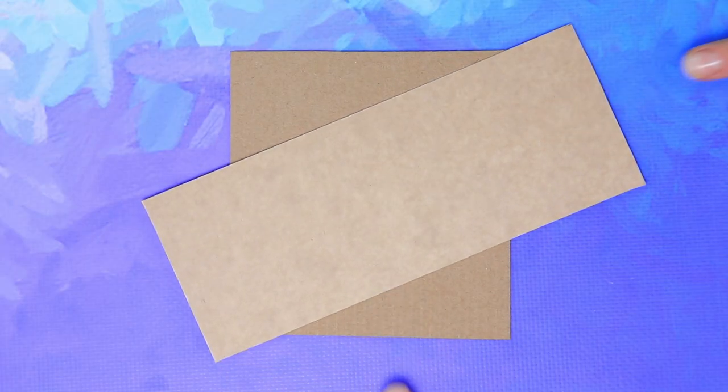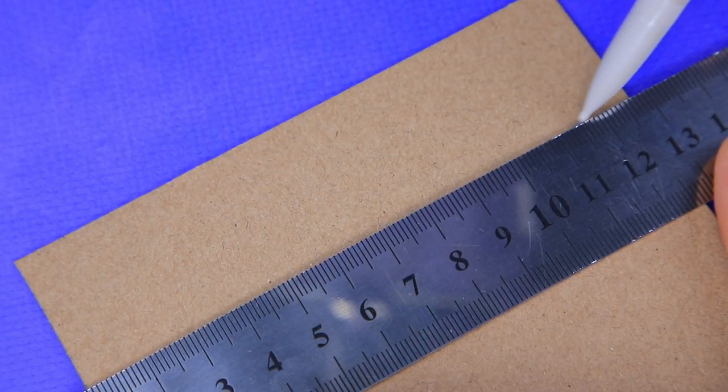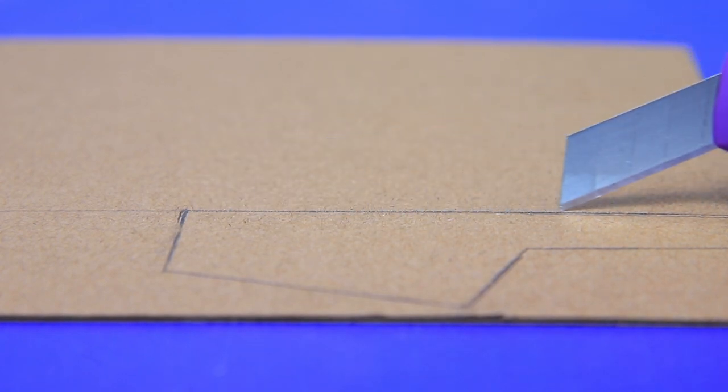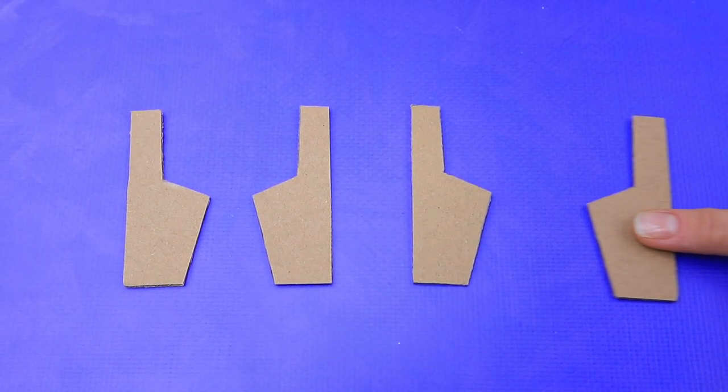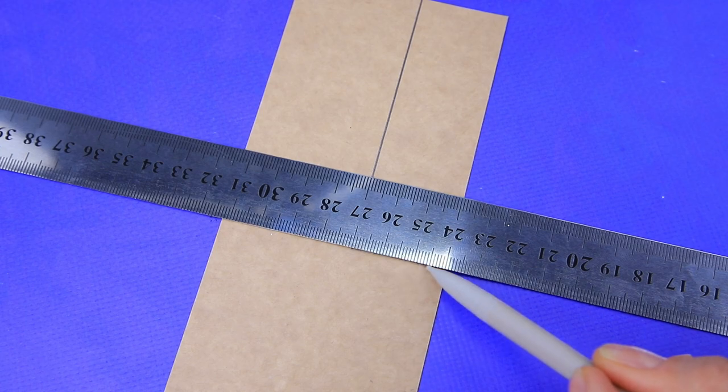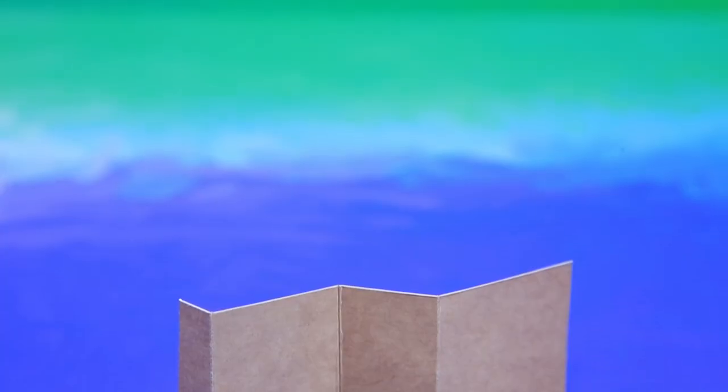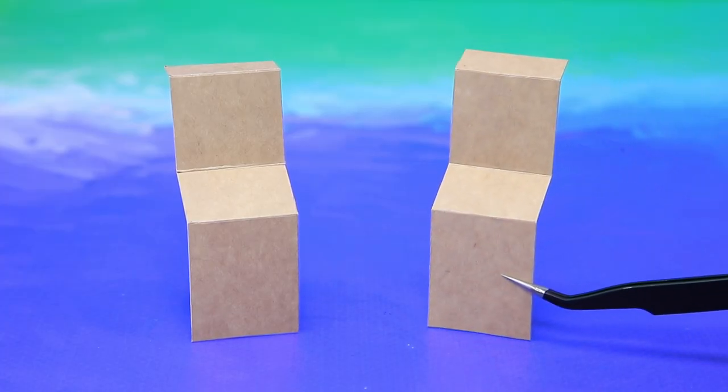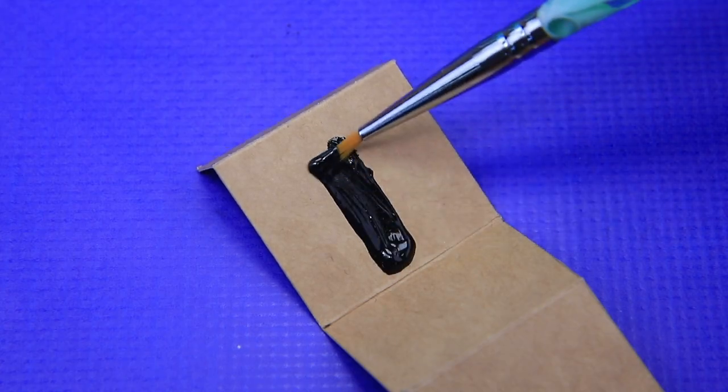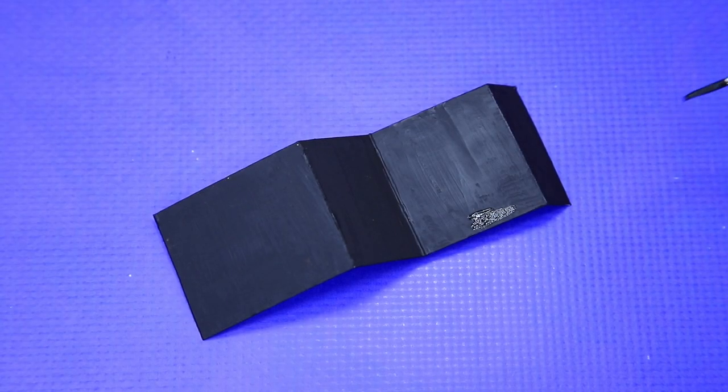We'll need cardboard to put together machines. Carefully cut out all the details. Brush, you've got a job to do. Everything got painted black.